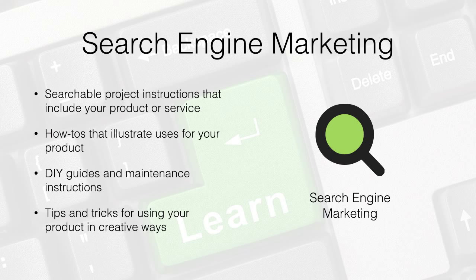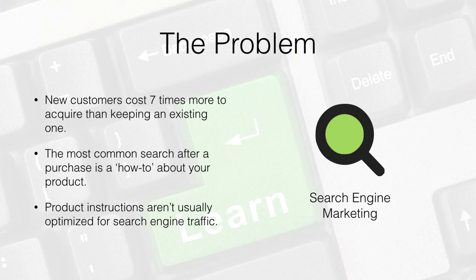Search engine marketing is all about making great content available on the web. Securing new customers is an expensive proposition. It costs seven times more to acquire a new customer than it does to keep an existing one. New customers are expensive, and it makes financial sense to focus on keeping the ones you have. The most common search after a purchase is a how-to about your product. The problem is that product instructions aren't usually search engine optimized, and that means your customers are going to have a hard time finding you before they get frustrated.